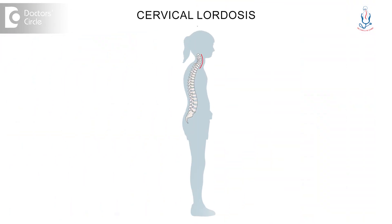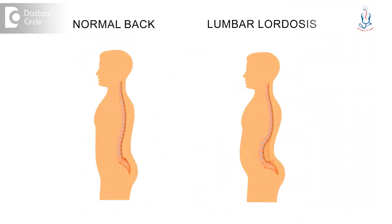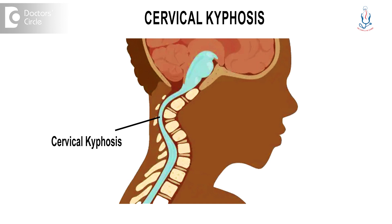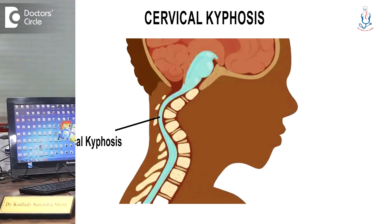So these are the normal curvatures: cervical lordosis, lumbar lordosis, and thoracic kyphosis. But sometimes there may be alteration — the cervical spine can go into kyphosis instead of lordosis, and even the lumbar spine can go into kyphosis instead of lordosis. So these are the altered curvatures.